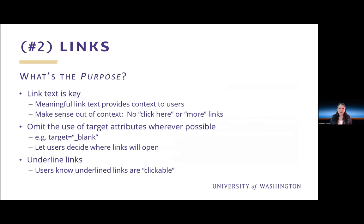The number two thing you can do to make web content more accessible is to create accessible links. Link text is key. It's important to provide meaningful link text that provides context to users so they know the purpose of a link before following it. Link text needs to make sense out of context. Assistive technology users can navigate via keyboard shortcuts and can bring up a list of just the links on the page. If the link text doesn't provide enough context, users won't know what these links are for. So we don't want to use link text such as 'click here' or 'more.'